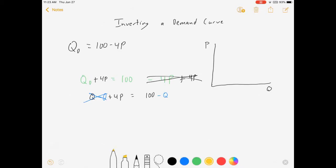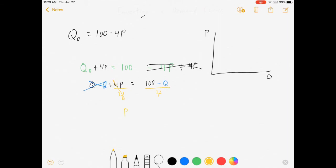Then I can divide both sides by 4, the 4's cancel, and I get P = (100 - Q)/4, which I could also rewrite as 25 - Q/4.